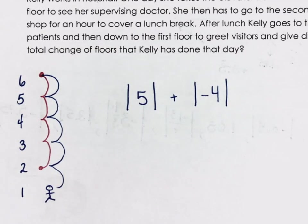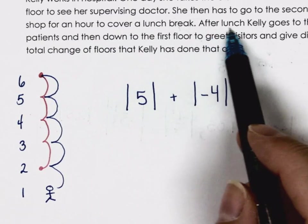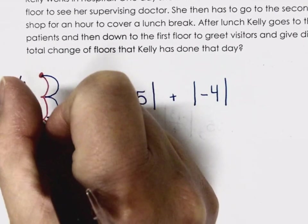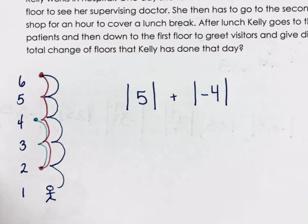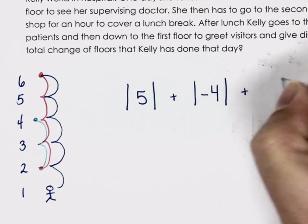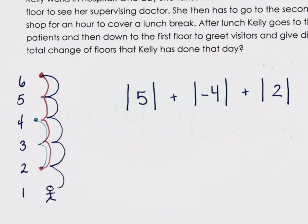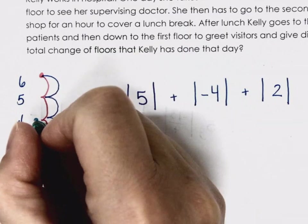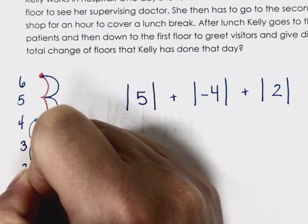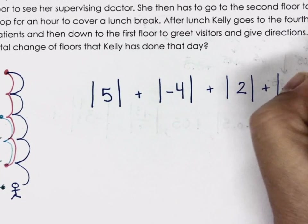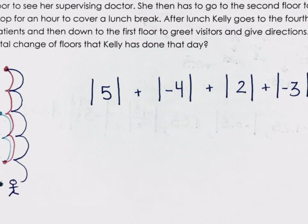After lunch Kelly goes to the fourth floor to visit patients. She's on the second floor and goes up two floors to the fourth floor — so that's two floors. Then she goes down to the first floor to greet visitors and give directions, going down three floors from the fourth to the first floor.